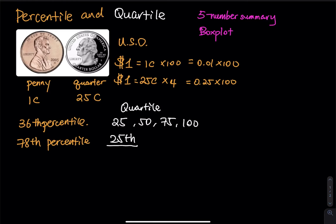The 25th percentile means I am looking for the first 25 percent of a quantity. If you have a dollar and you are looking for the 25th percentile, I am looking for the first 25 percent. The 50th percentile is the first 25 percent plus the next 25 percent.